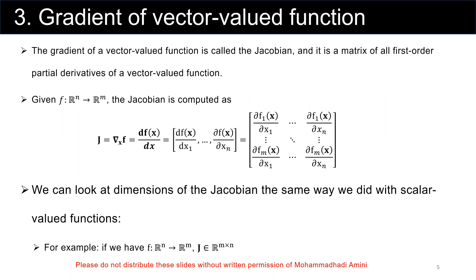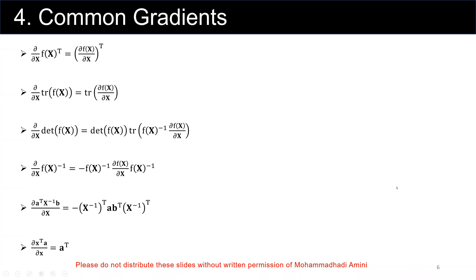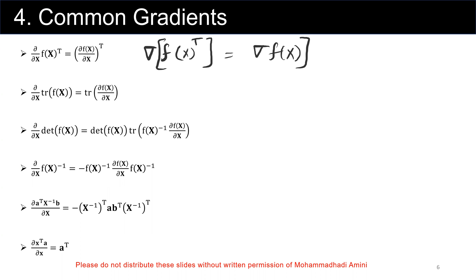Now that we have an idea of the definitions of gradient for both scalar valued and vector valued functions, let's go to the common gradients. There are some commonly defined gradients that help us simplify complicated tasks. For example, the gradient of f of x transpose is equal to the gradient of f of x, then transposed. The gradient of the trace of f of x is equal to the trace of the gradient of f of x.